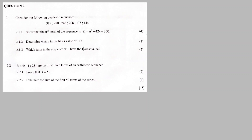Now question 2.1 — consider the following quadratic pattern: 319, 282, 243, 208, and so on. Question 2.1.1: show that the nth term of the sequence is n squared minus 42n plus 360.